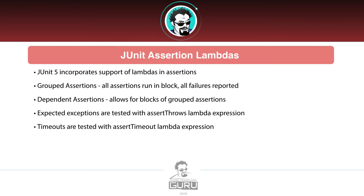Traditionally in JUnit 4, when an assertion failed — if you had five assertions and number two failed, that's where the test would stop. This is a problem when testing a lot of properties, like on a type conversion. You fix one, run your tests again, then there's another broken, you fix that, run again, another's broken. So having grouped assertions is really nice — you can have several assertion failures and go back and fix them all at the same time.